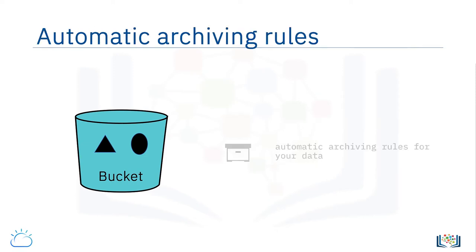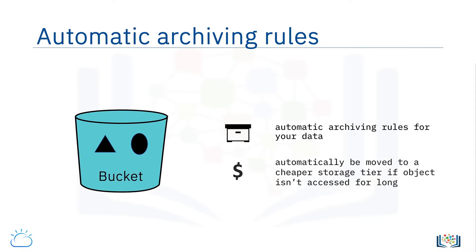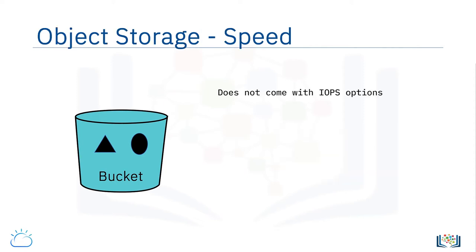Often you can also set up automatic archiving rules for your data, meaning that if an object isn't accessed for a period of time it will automatically be moved to a cheaper storage tier. The rule uses some of the object's metadata to determine when it should be archived. Note that object storage does not come with IOPS options.